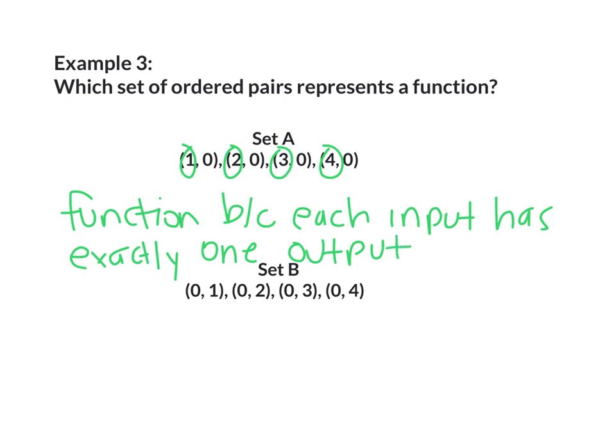Now let's look at set B. I'm going to circle all my inputs. I have 0, 0, 0, 0. 0 has an output of 1, 0 has an output of 2, 0 has an output of 3, and 0 has an output of 4. This is not a function because each input does not have exactly one output. It has multiple.